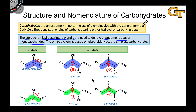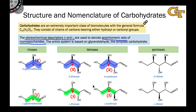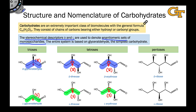As we move to larger sugars, this trend continues. We can still find the carbons of D-glyceraldehyde on the end of, say, the pentoses right here. And it's this carbon — carbon 2 in the original glyceraldehyde — that defines D and L.